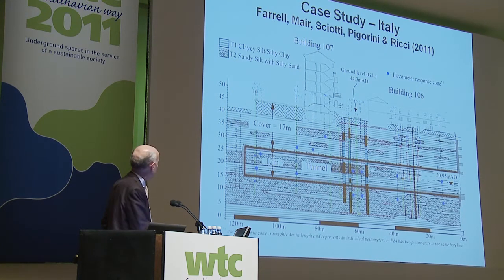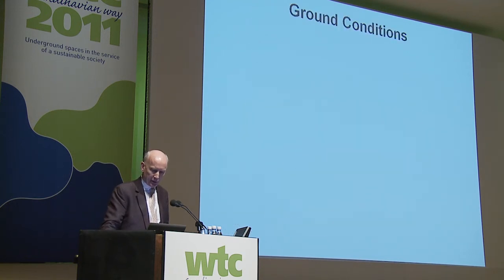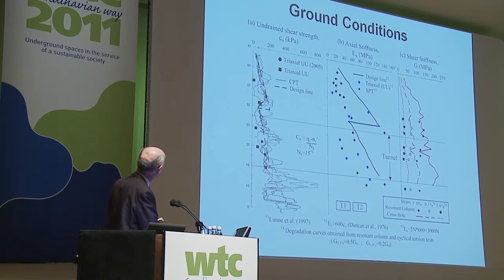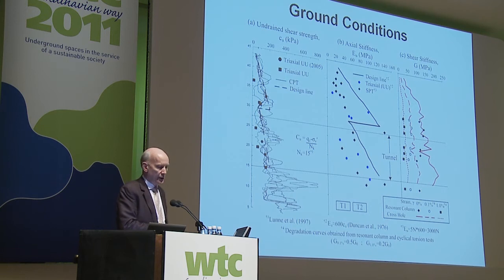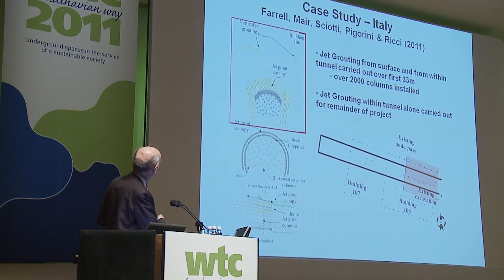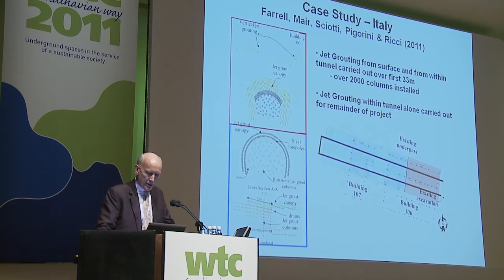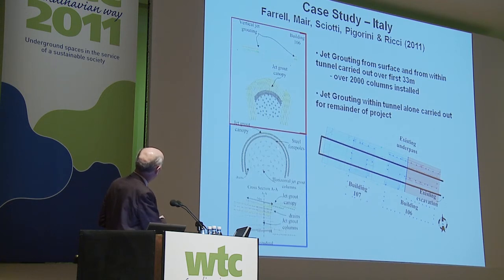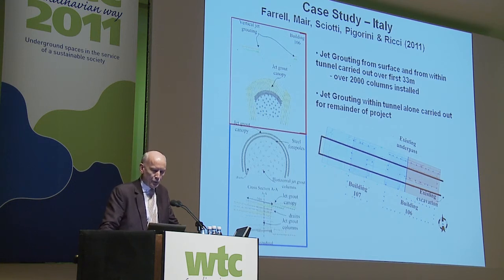This is a cross-section showing the 12-metre diameter tunnel about 17 metres below ground level. The undrained shear strength at tunnel level varies between about 100 kPa and 200 kPa. In the first part of the drive, jet grouting was undertaken from the ground surface to create a canopy above the tunnel. In the second part, most of the jet grouting was undertaken from inside the tunnel, with additional treatment at the tunnel face.